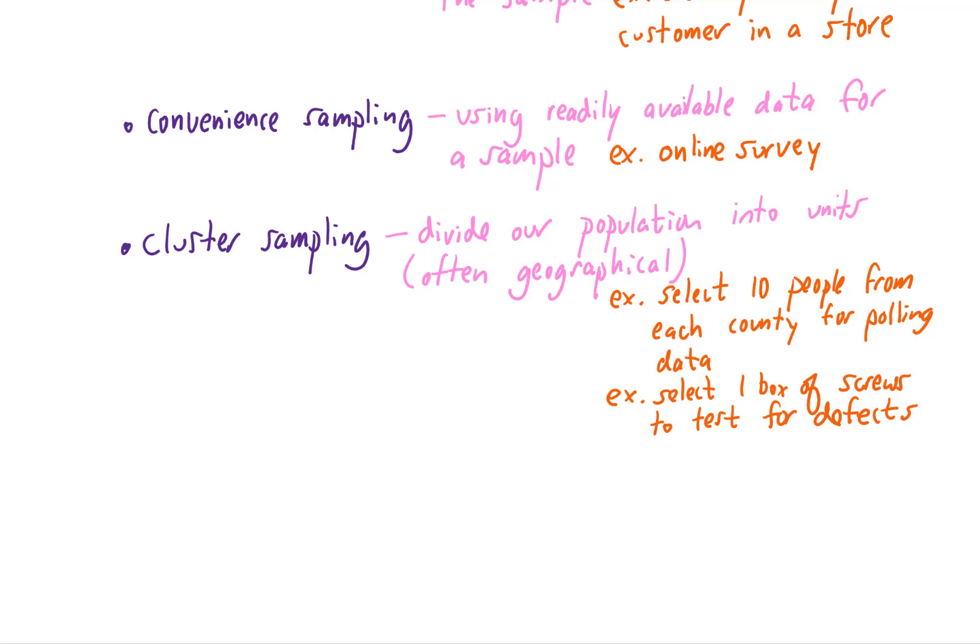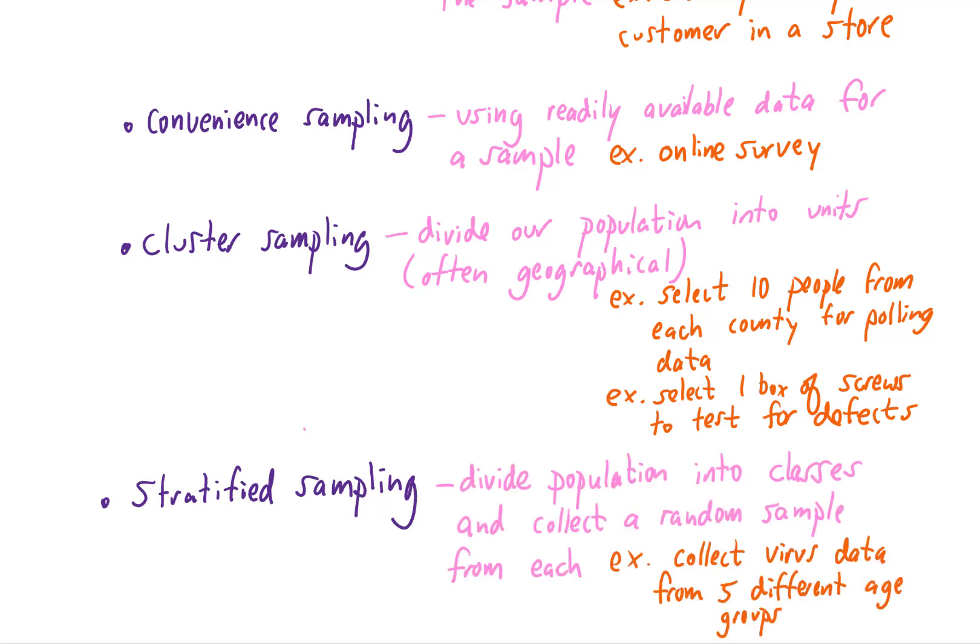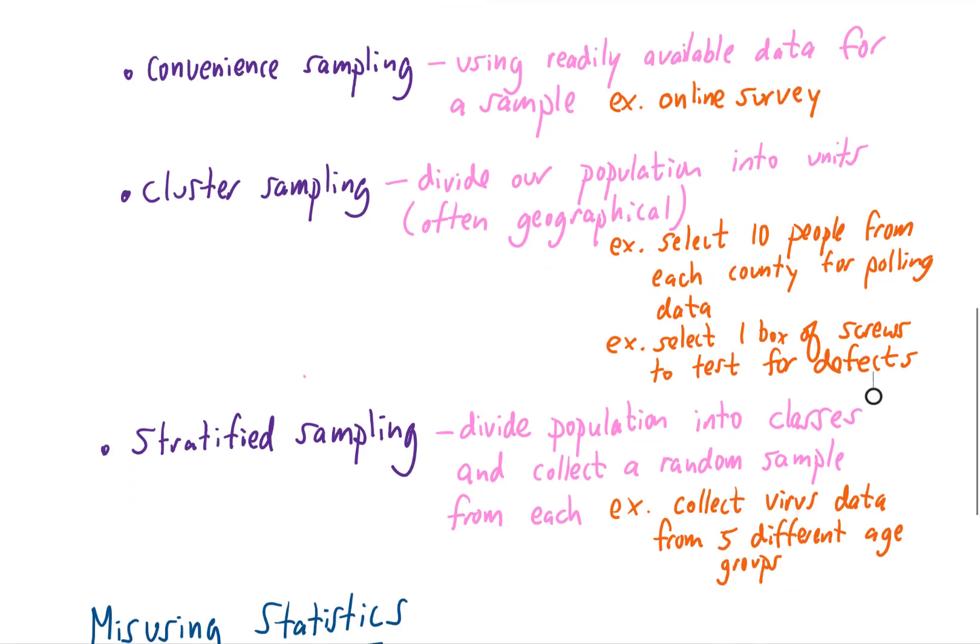Our last sampling technique is called stratified sampling and in stratified sampling we divide our population into classes, also called strata, that are already there. For example, we can divide a population up by age or gender or race or religion or income or something like that and then from each one of those classes we can collect a random sample. An example here would be dividing up the population of the U.S. into five age groups and then collecting virus data from each of those five age groups.